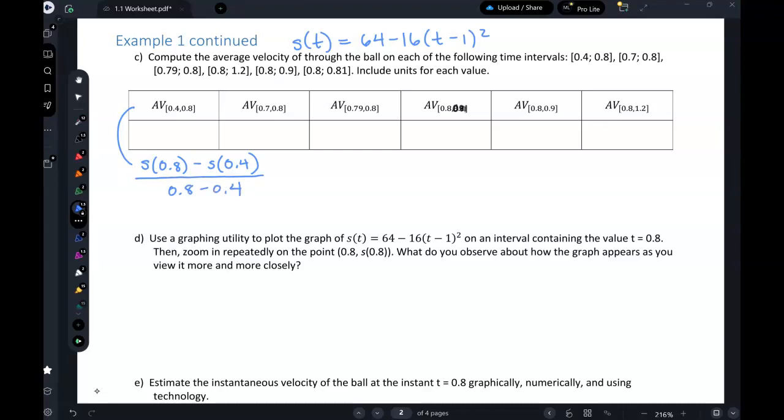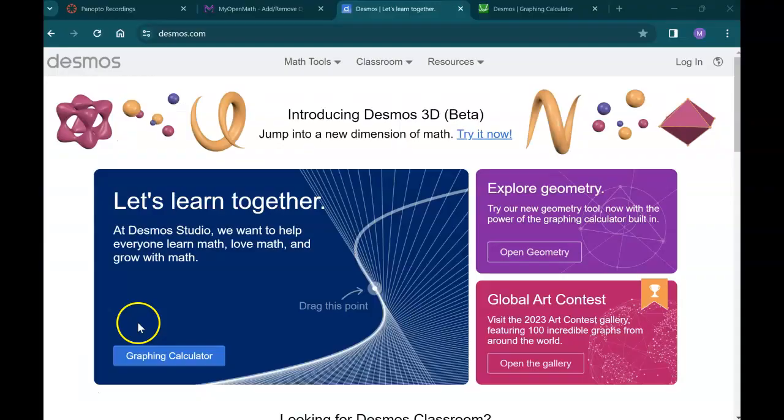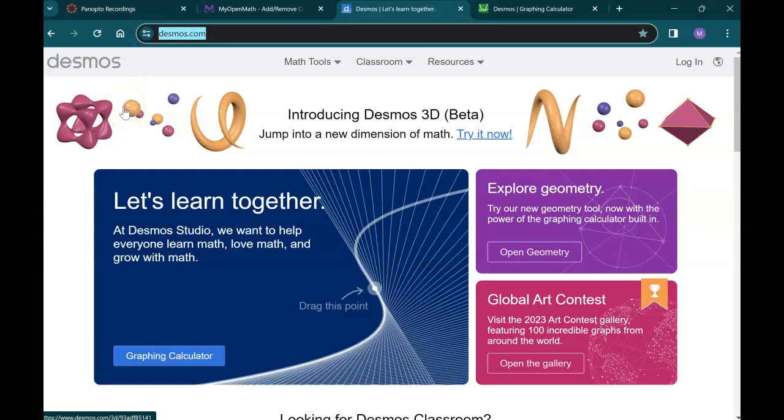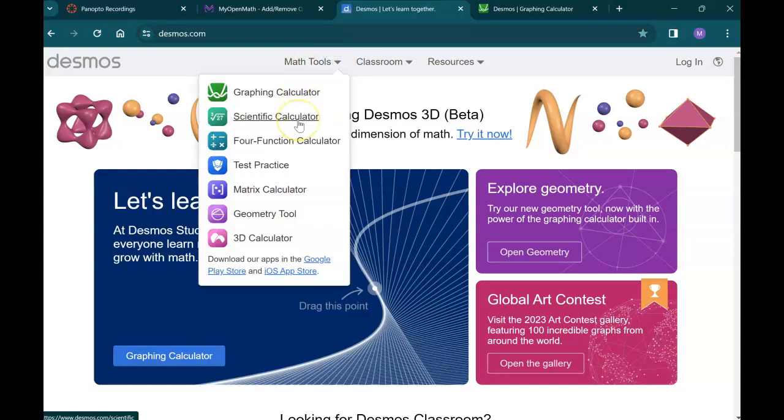And this is where technology comes in. Feel free to use whatever calculator you have handy. You'll want to be able to crunch something like this in class when you may not be allowed to use Desmos. But I would like to show you Desmos right now because it is wonderfully handy to use as you're working through homework. So if you'd like to follow along, head to desmos.com, D-E-S-M-O-S. When you get here, you can click graphing calculator. I will point out that under math tools, there's also scientific calculator, four function calculator. So feel free to play around.